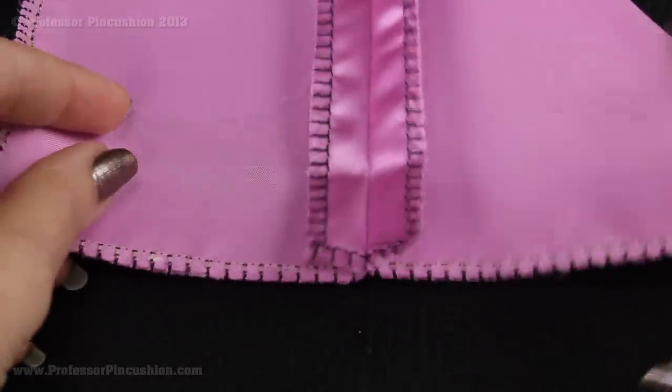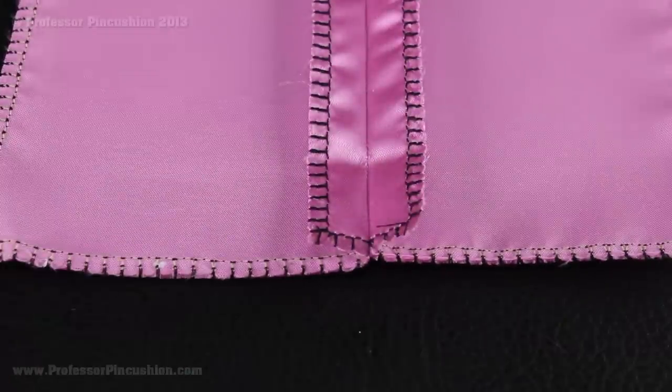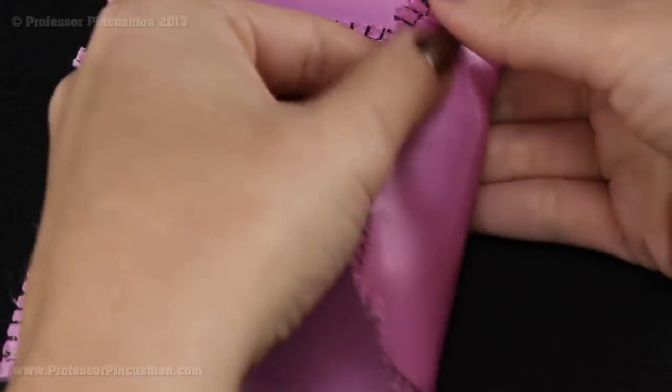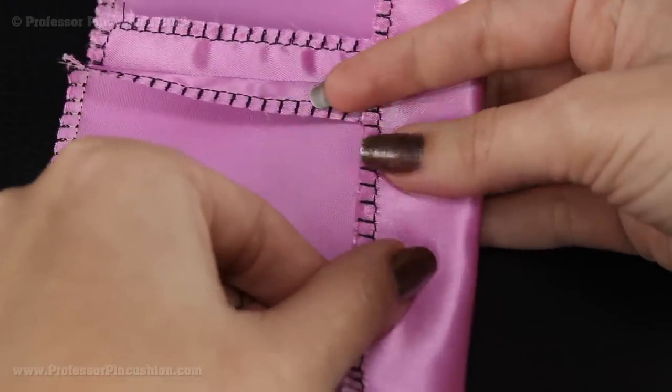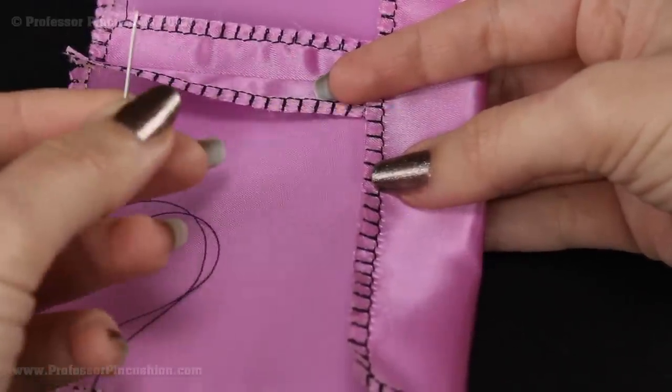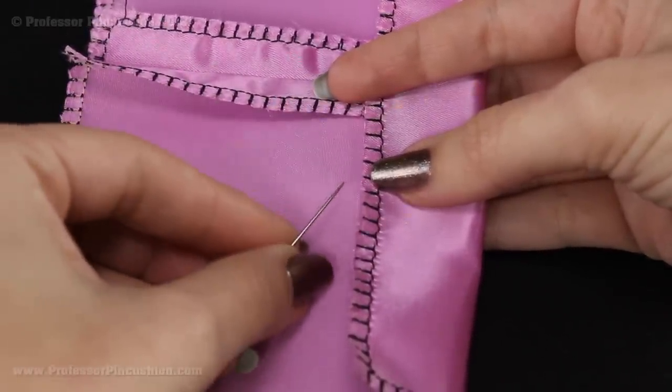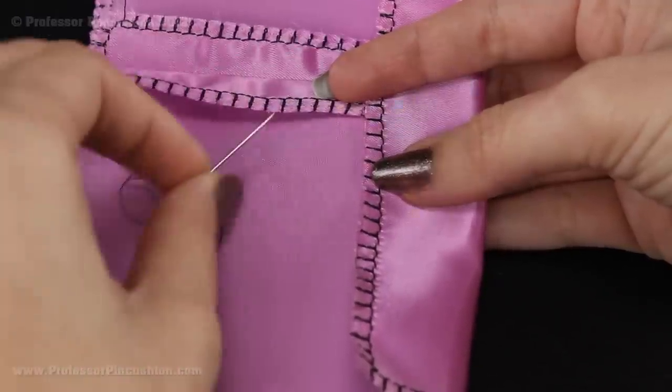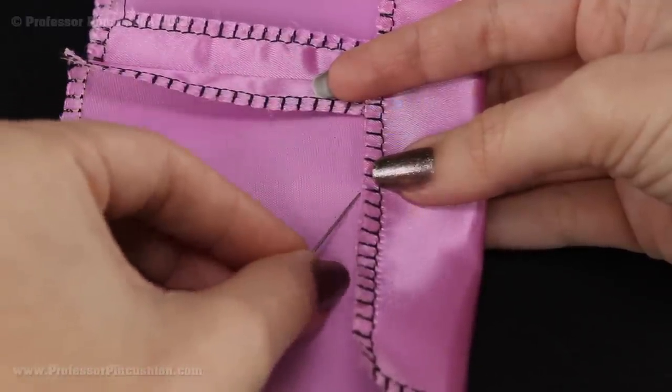Next we're going to talk about the hem. You have a couple of different options you can do here. Just going to turn this and fold this. Now if you want a softer look I'd probably recommend doing a hand blind hem. You can also do a rolled hem which looks very nice but you'll want to check out our tutorial on doing the rolled hem on our website. For right now I'm just going to show you how to do the blind hem.